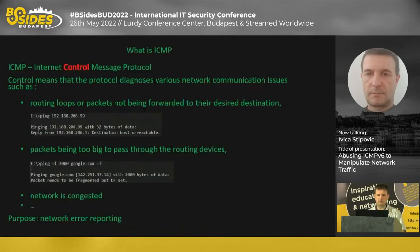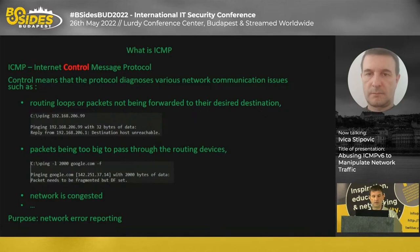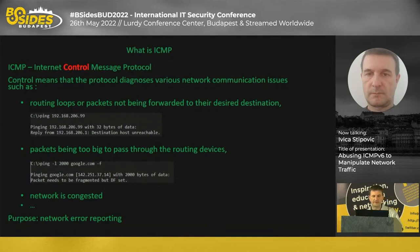Let's start with ICMP — it stands for Internet Control Message Protocol. I deliberately emphasize the 'control' part because it means the protocol is able to diagnose various conditions that happen in the network. Sometimes it mitigates issues automatically; sometimes it just provides an error message indicating the root cause. For example, routing loops or packets not being forwarded to their desired destination — destination host unreachable, destination net or port unreachable, and so on.